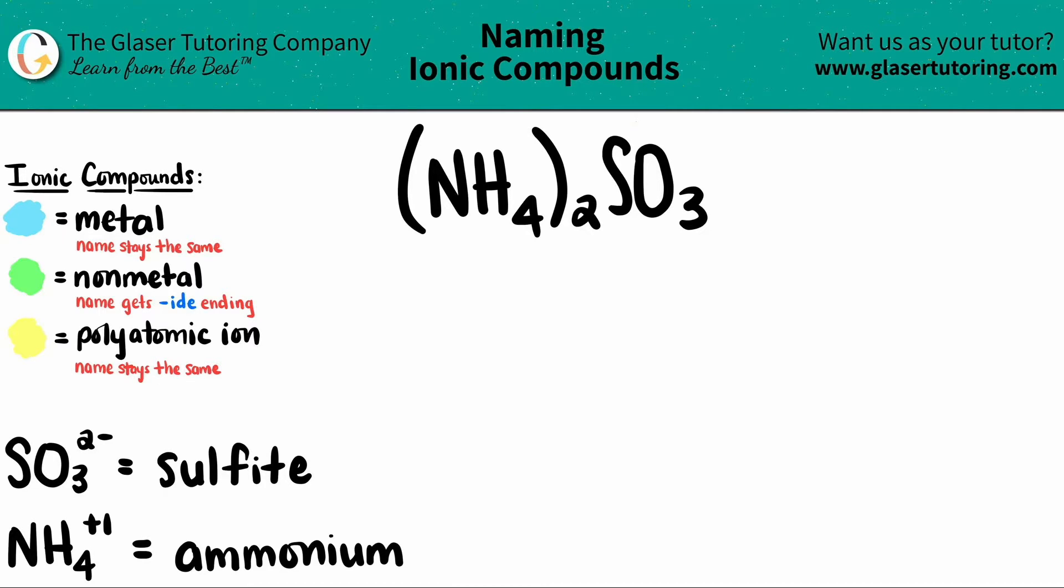Remember, the polyatomics are never going to be on the periodic table. They're always going to be memorized. So in this case, I wrote down the ones that we should memorize, and that's how we can spot them out on a compound.